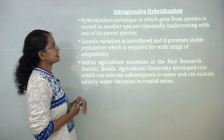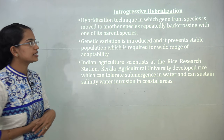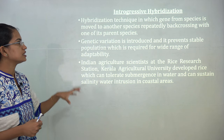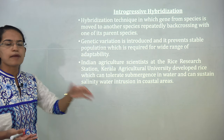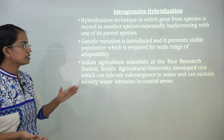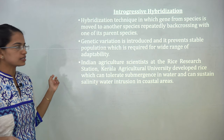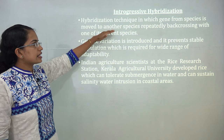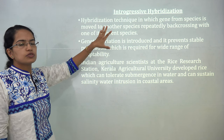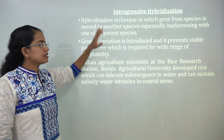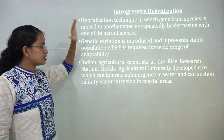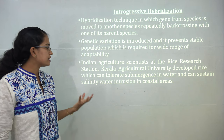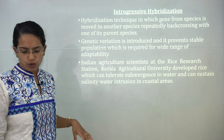Introgressive hybridization is a technique where genes from one species are moved to another by back-crossing one of the genes to the parent species. Indian agriculture has constantly used this technique. A common example is the rice research institute in Kerala, where they have developed rice that can tolerate submergence in water.